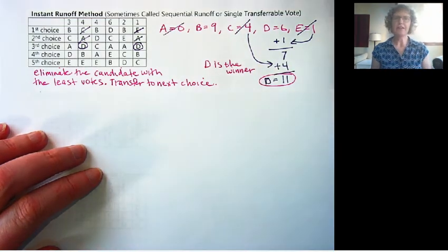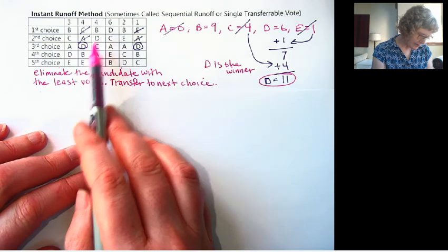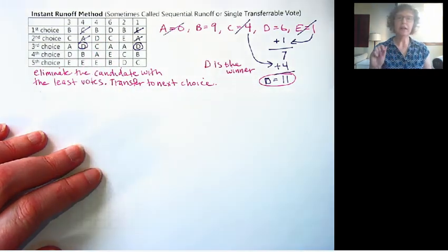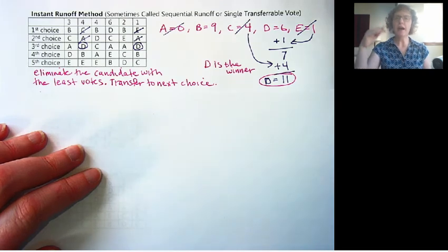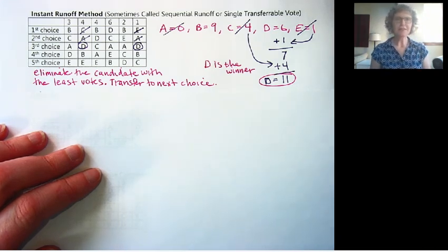D is the winner in the instant runoff method. Interesting, huh? So you want to not only be someone's first choice, but you want to be high up on everyone's list to be the winner in this method. Okay, so that is the instant runoff method, and I'll see you in the next one.